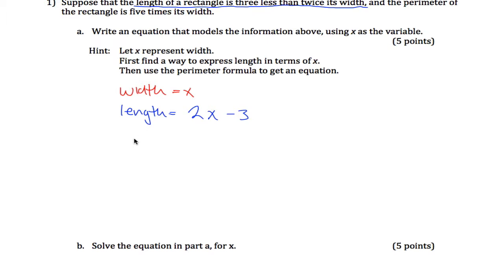Then I've got to find out the perimeter. The perimeter tells me up here the perimeter is 5 times its width. So width is x, 5 times its width would be 5x.